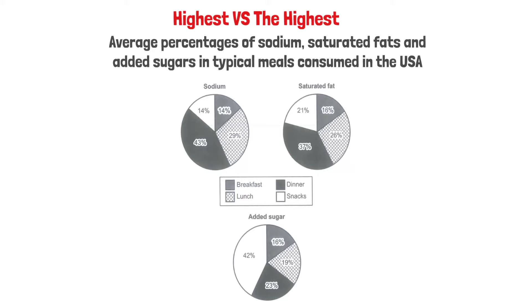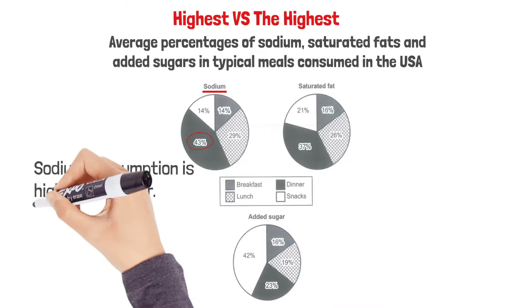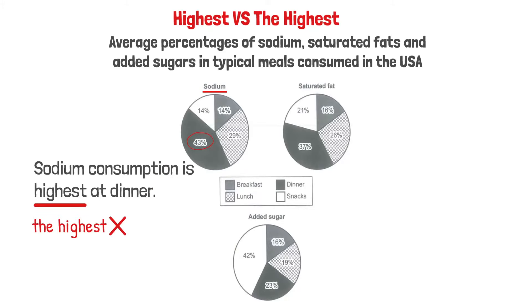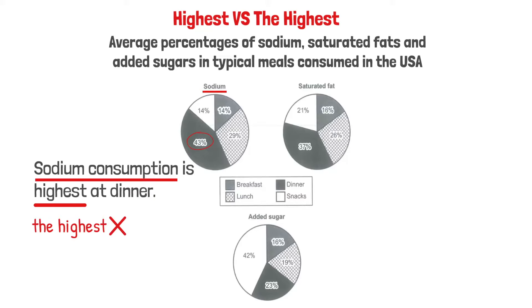Here's another example. This pie chart shows average percentages of sodium, saturated fats, and added sugars in typical meals consumed in the USA. The first chart represents sodium consumption. As you can see, sodium consumption is highest at dinner — we should use 'highest,' not 'the highest,' because we are comparing the same thing, which is sodium consumption, across different meals. So please keep in mind that superlative adjectives do not always take the definite article.